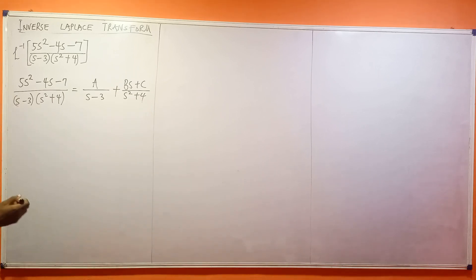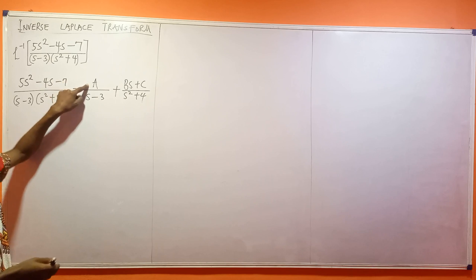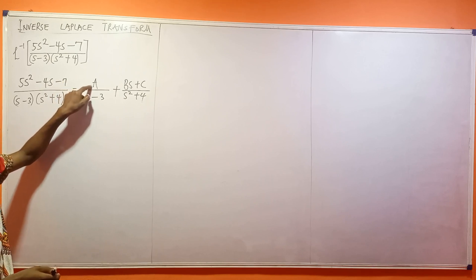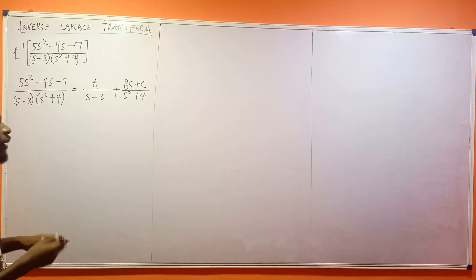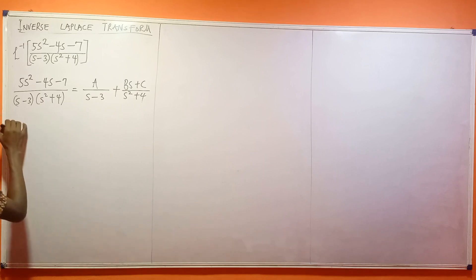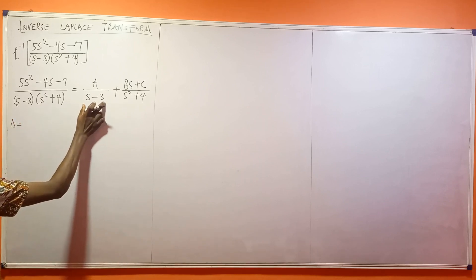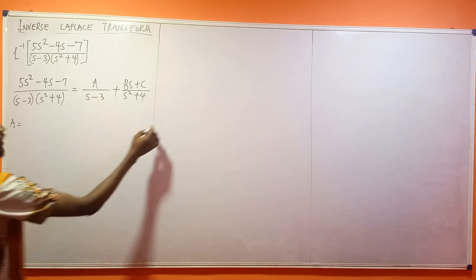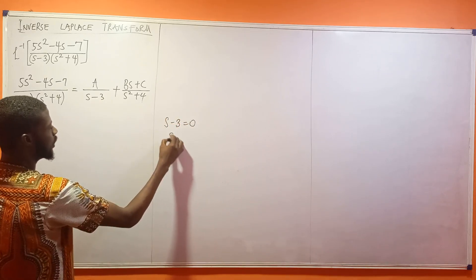Now what am I going to do? Let me find the value for A first of all. I can do that using the cover-up rule. So A would then be equal to — what's at the bottom of A? s minus 3. So I'm going to say s minus 3 equals 0.